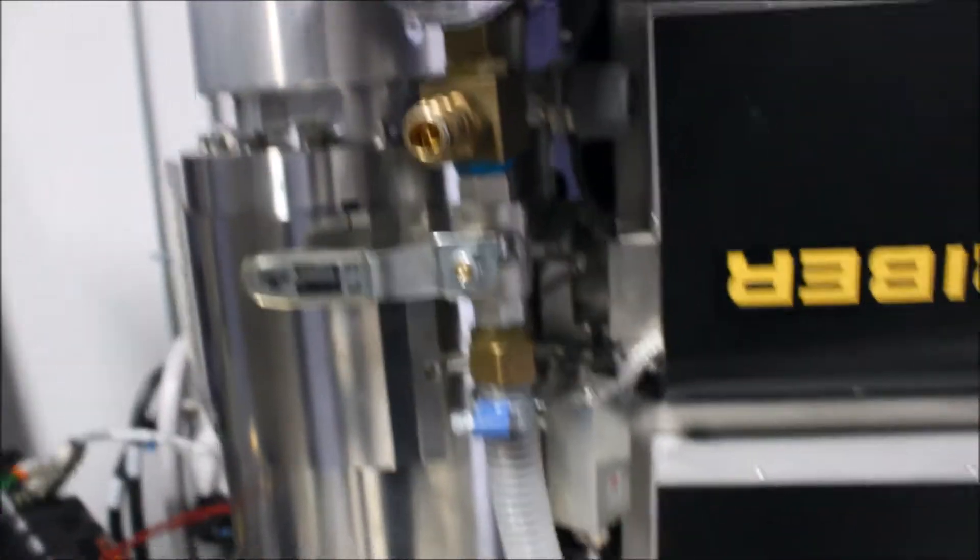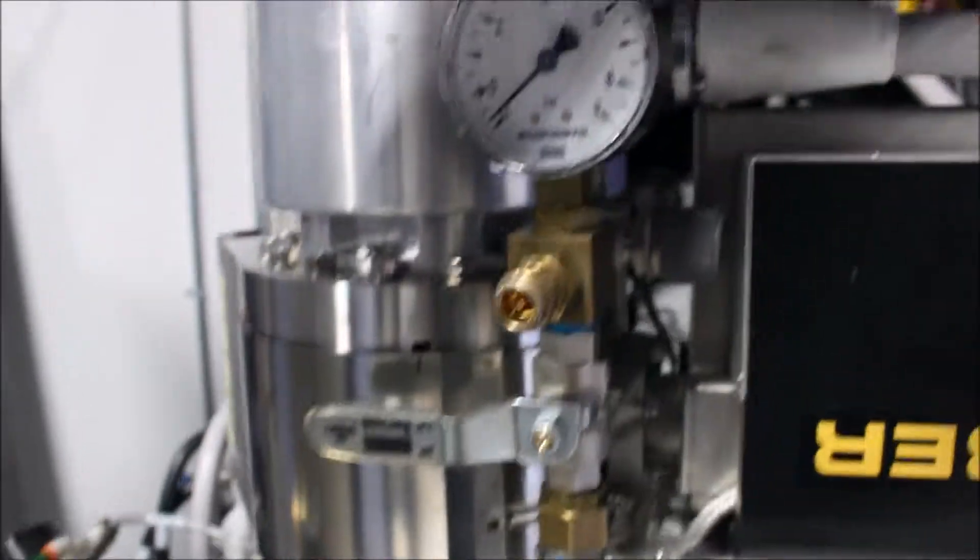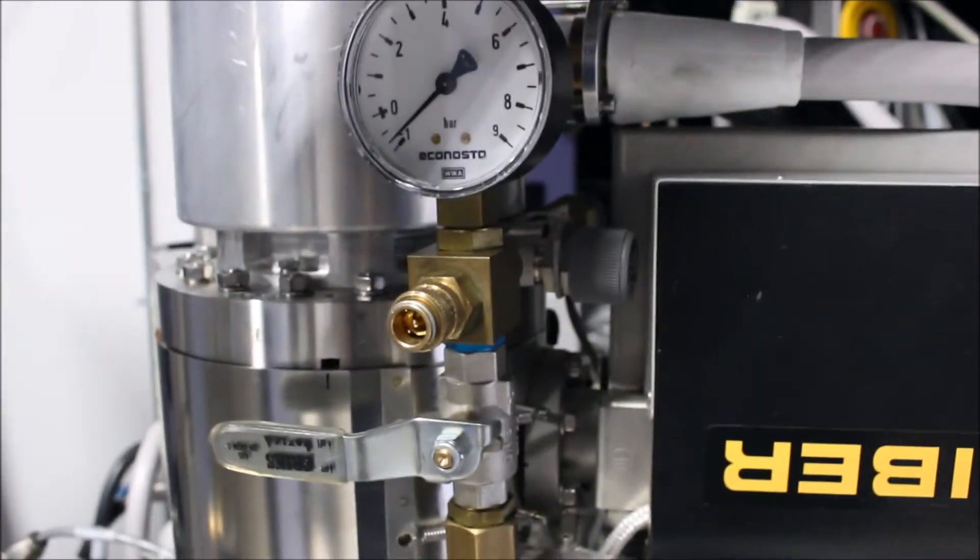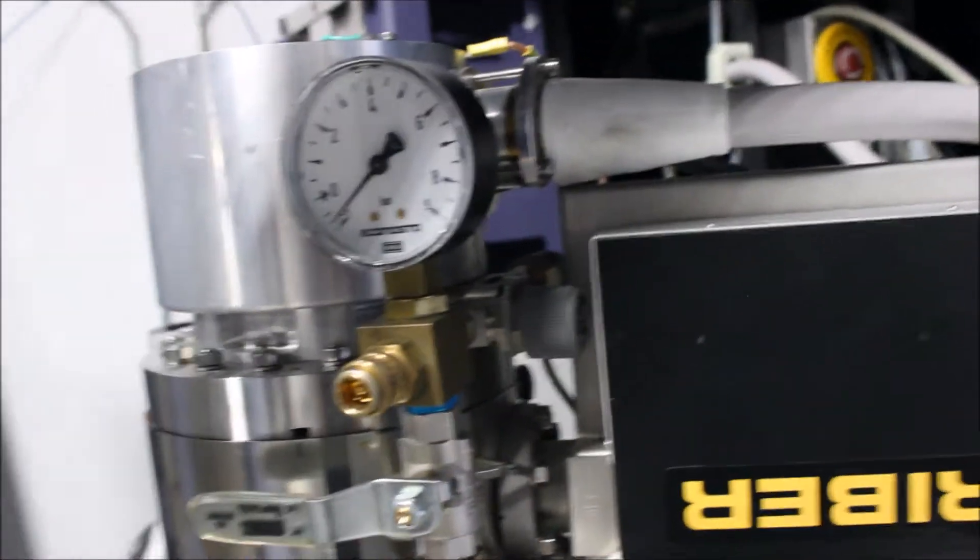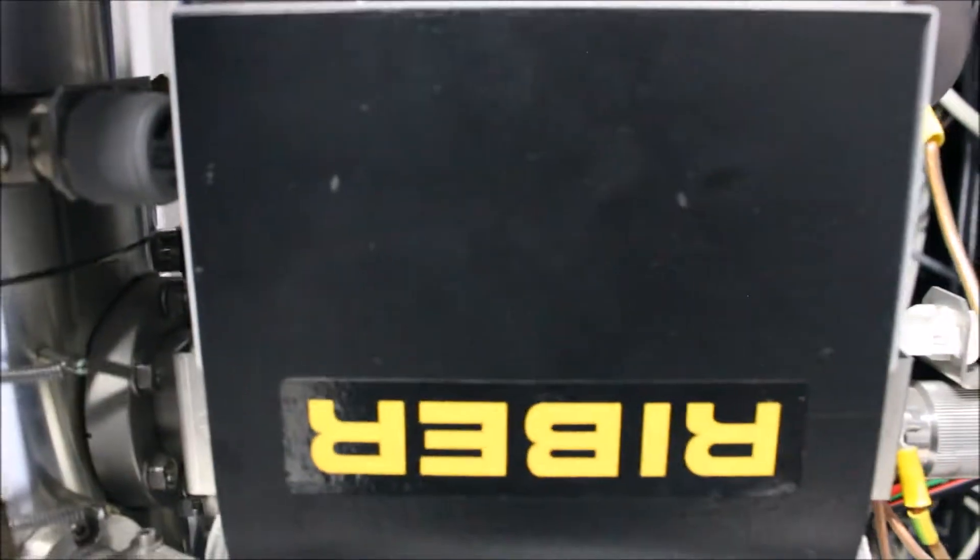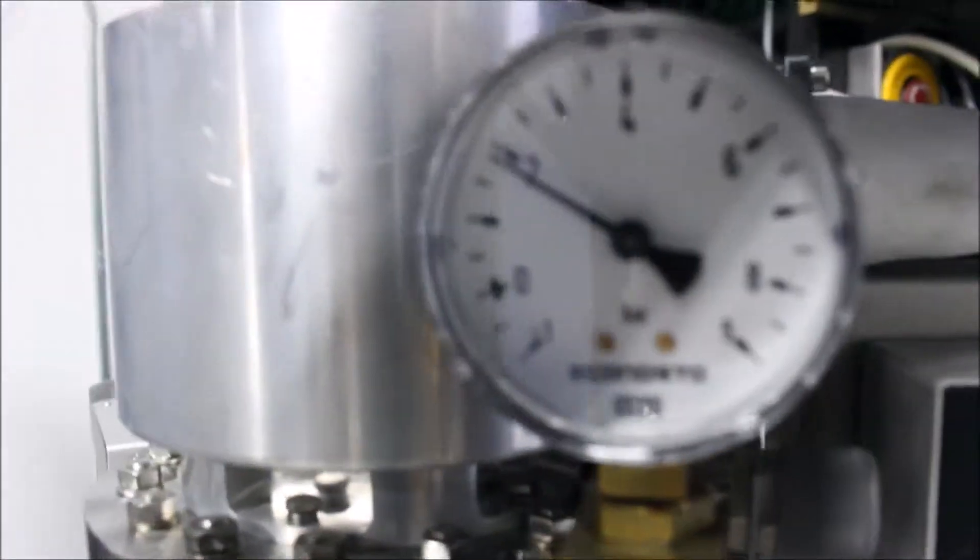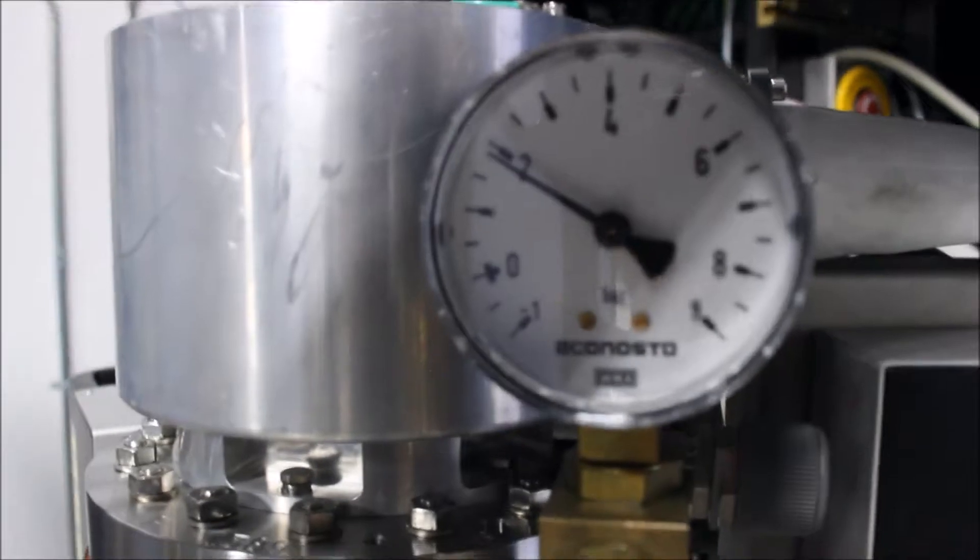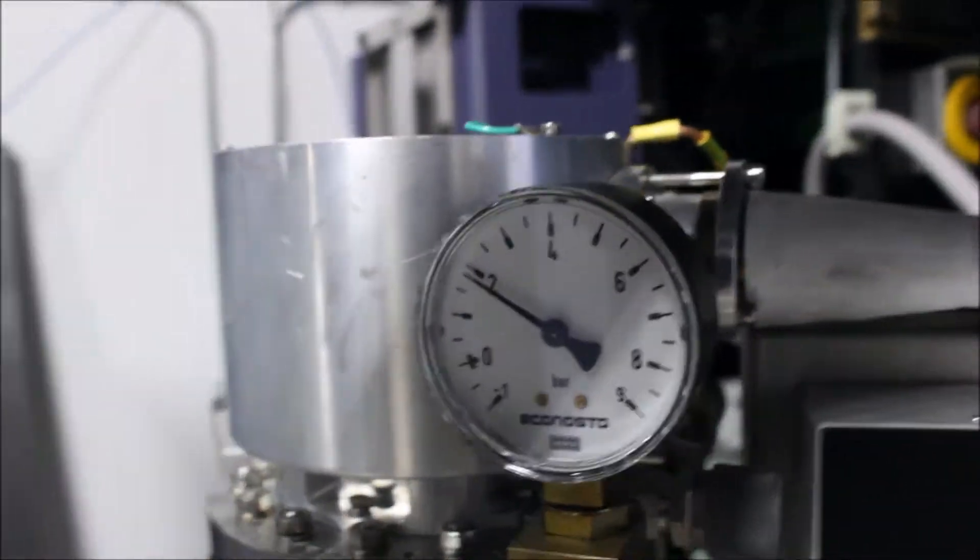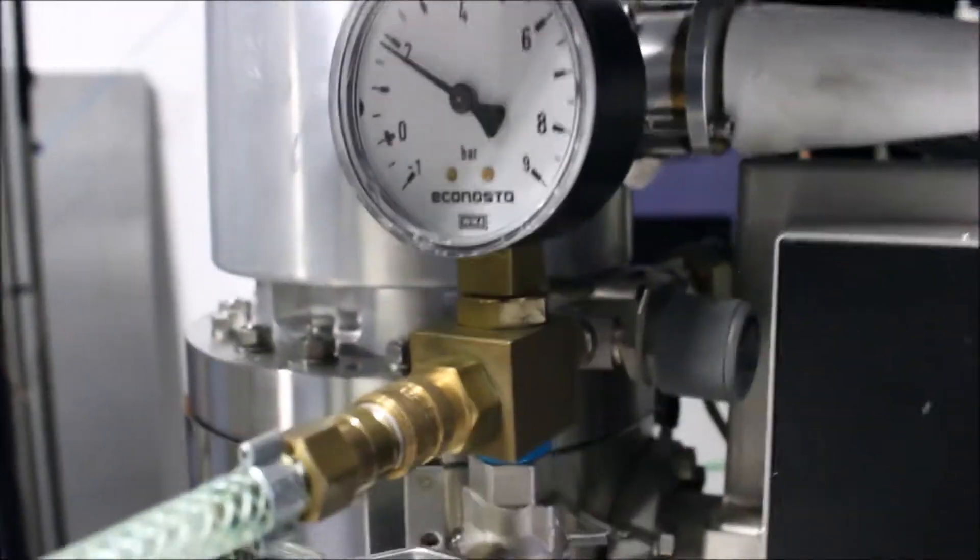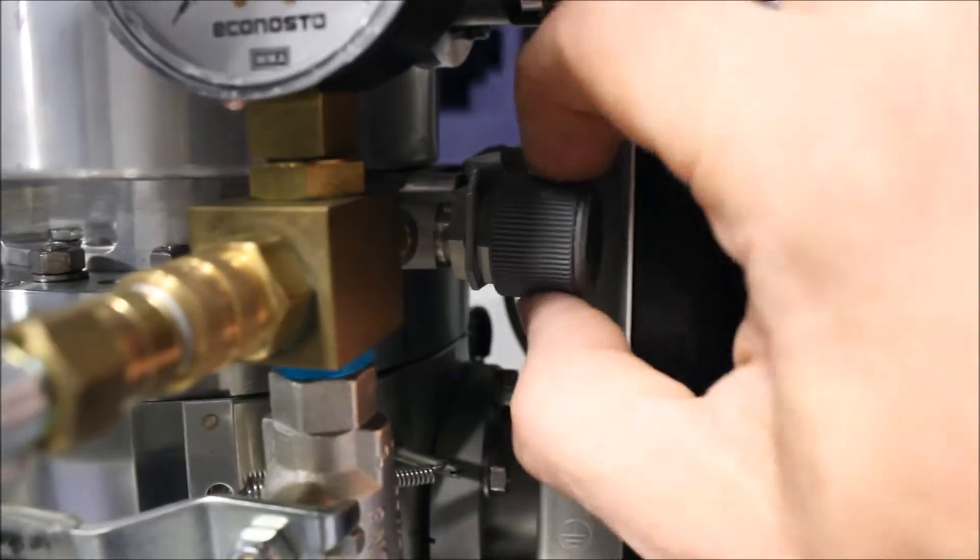Now we can attach our SF6 pressure line, and we're up to two bars, two atmospheres. That's where we want it so that our SF6 chamber is up to two atmospheres. Now we close this valve, this SF6 valve, holding that two bar, two atmospheres in the SF6 chamber.